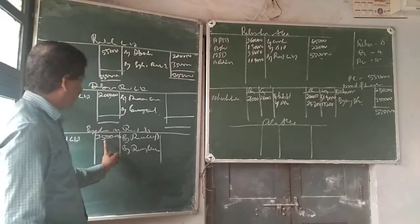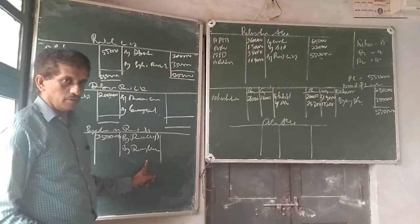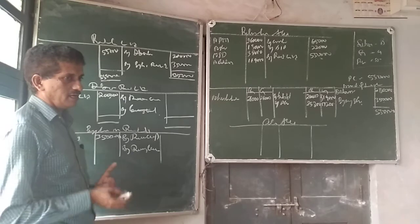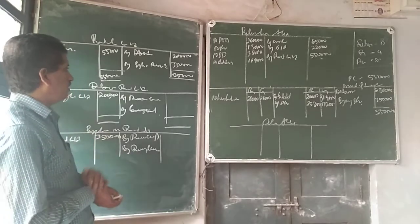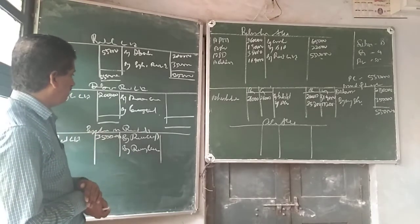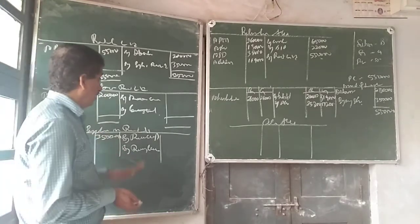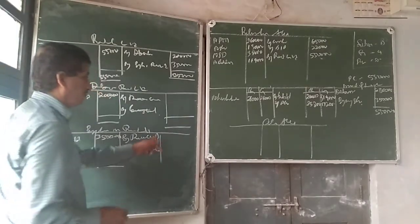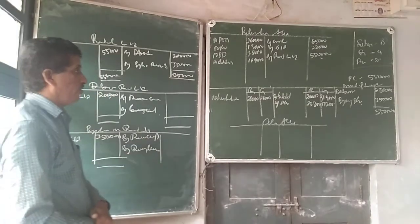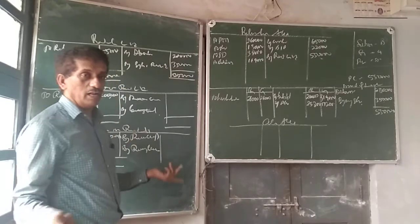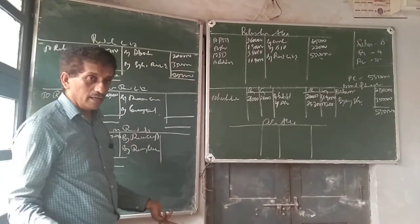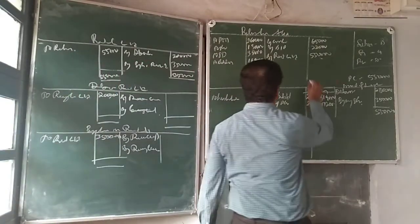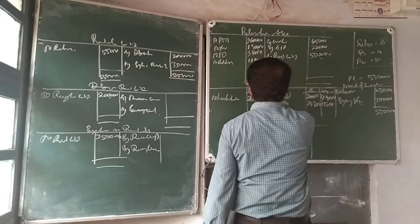Now 3 lakh 50 thousand should be given to the partners. What you are supposed to do here is bring in 3 lakh 50 and divide it in the ratio. The ratio is given to you. First, find out the realization.